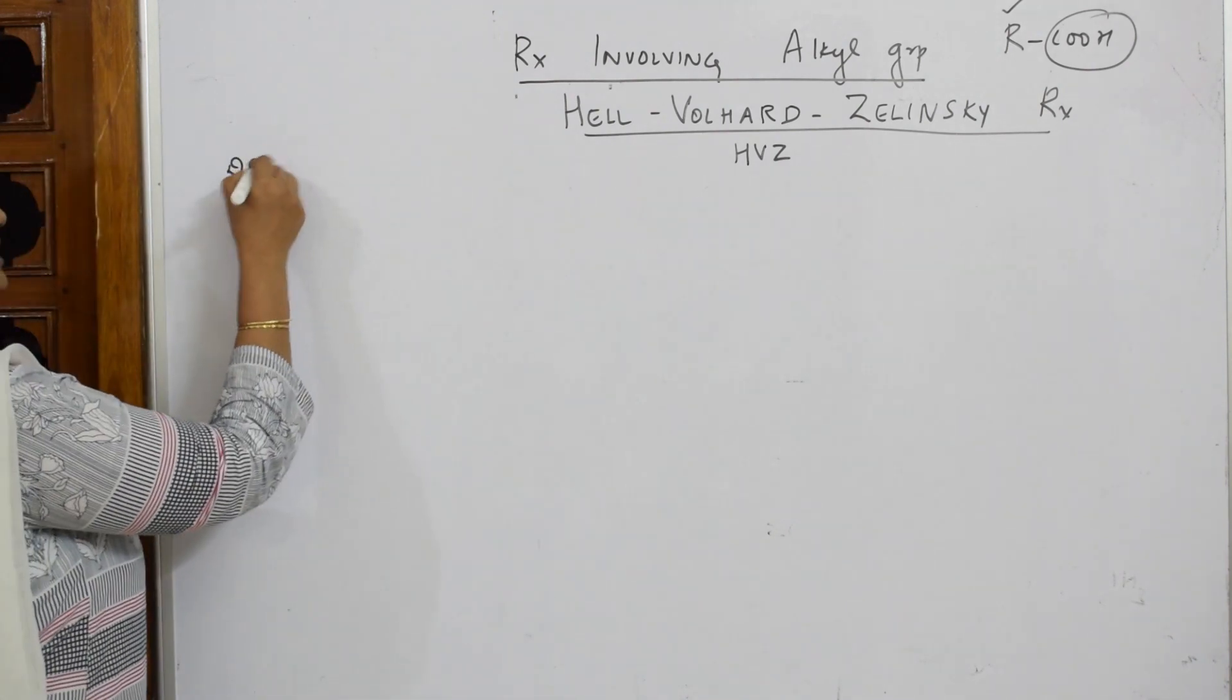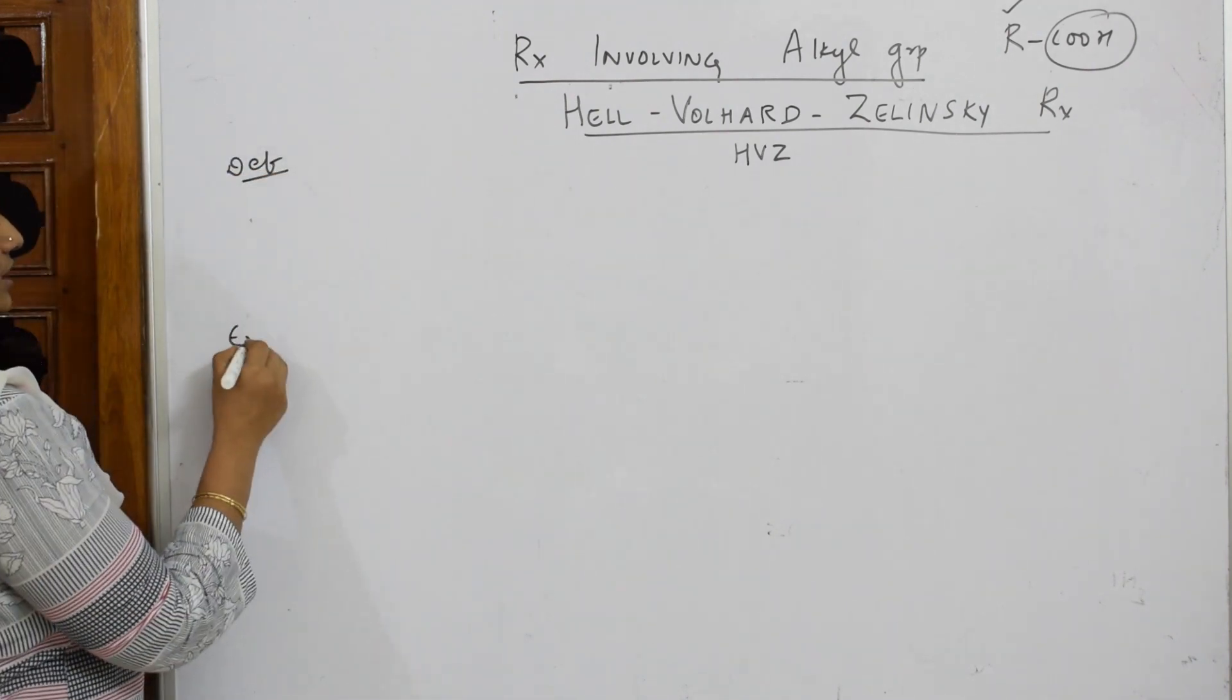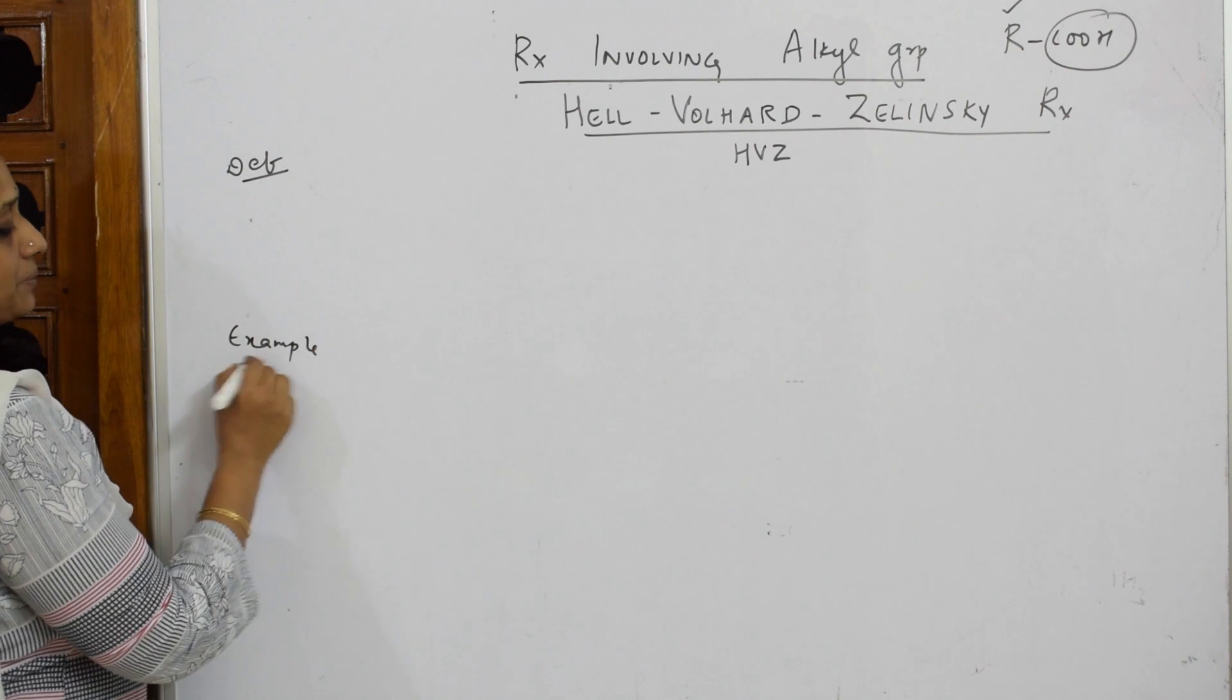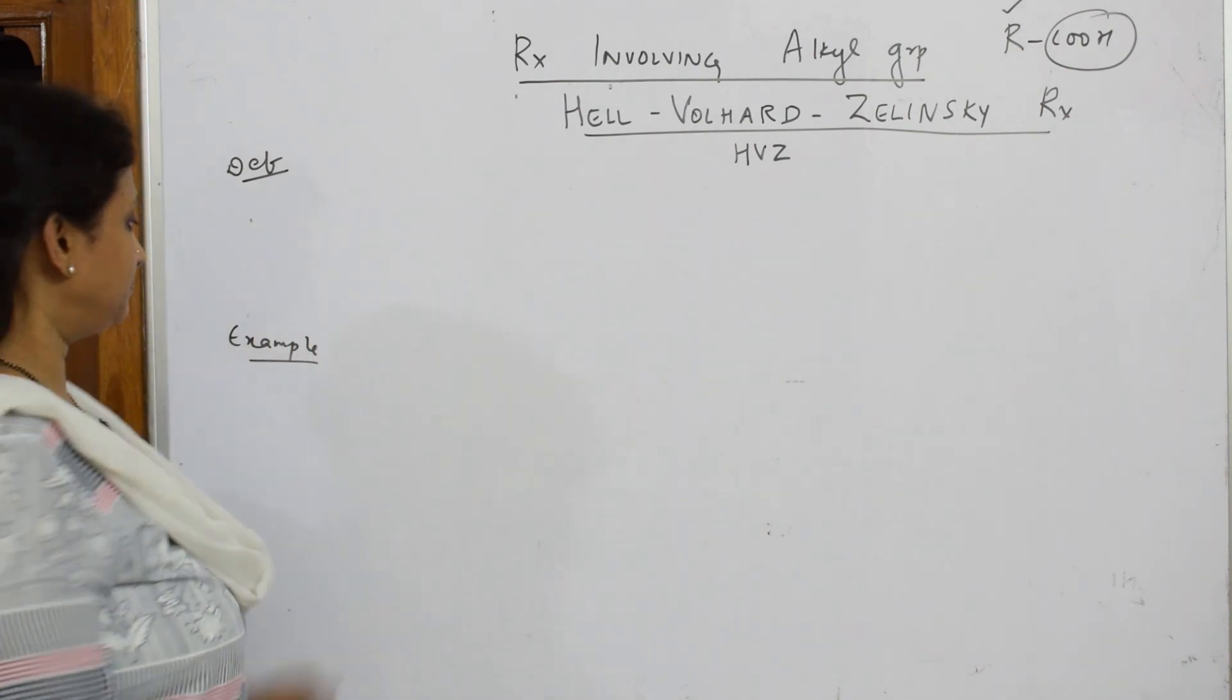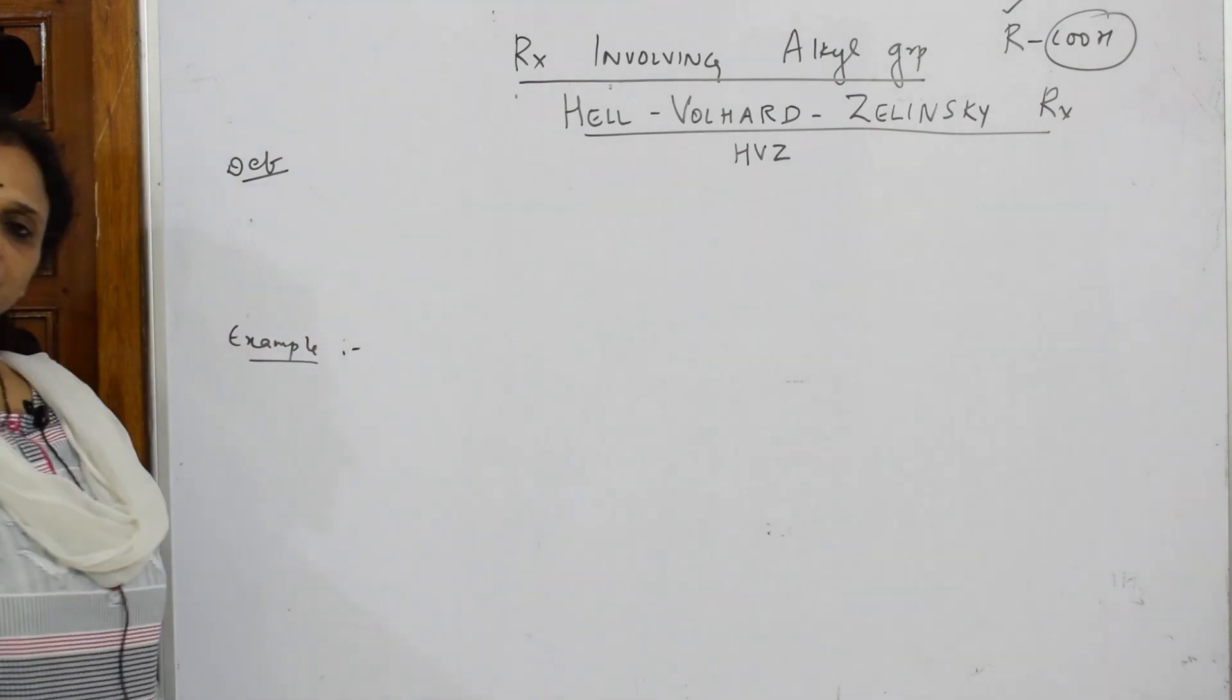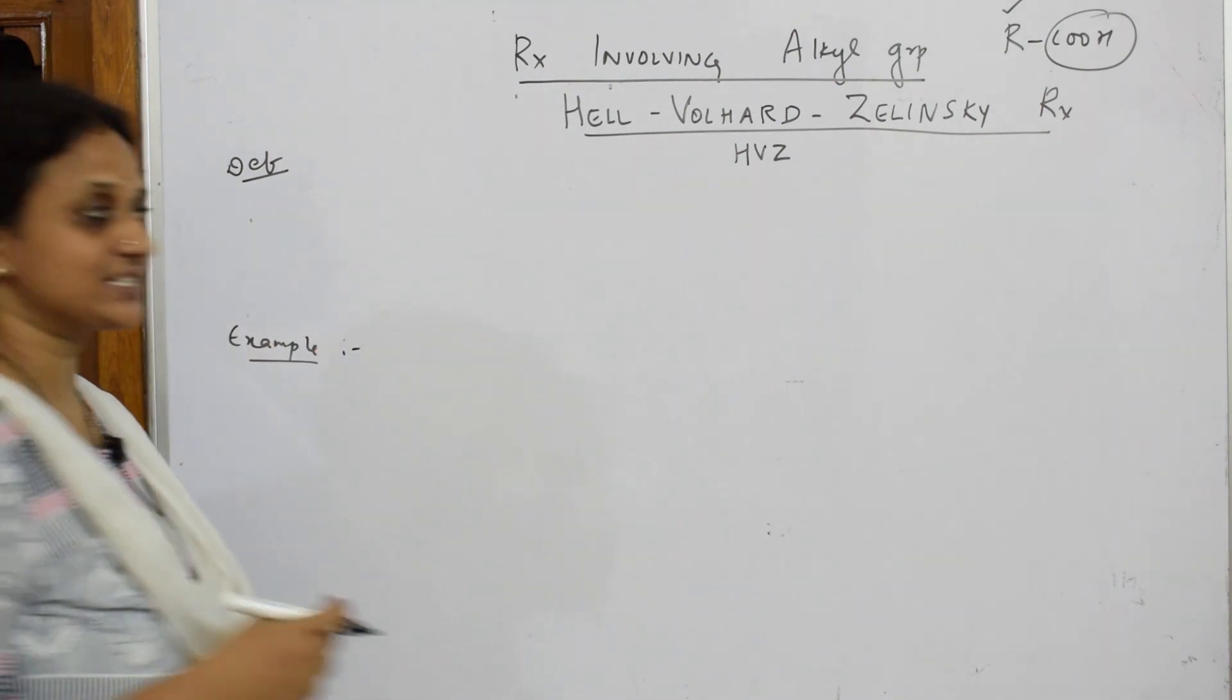Basically when you're writing such named reactions, as I say, first try to write the definition, try to take the example and try to label the reactants and products. Now first let me write the example and then it's easy.